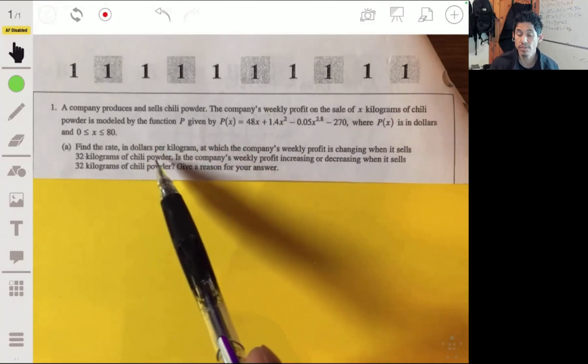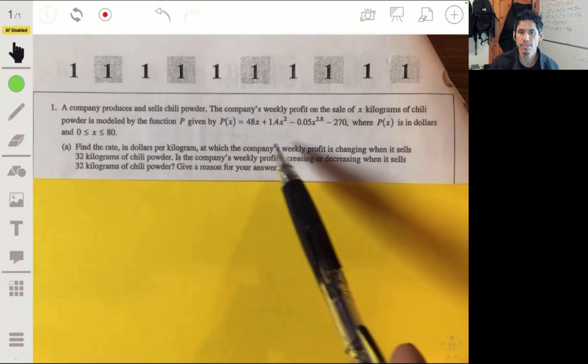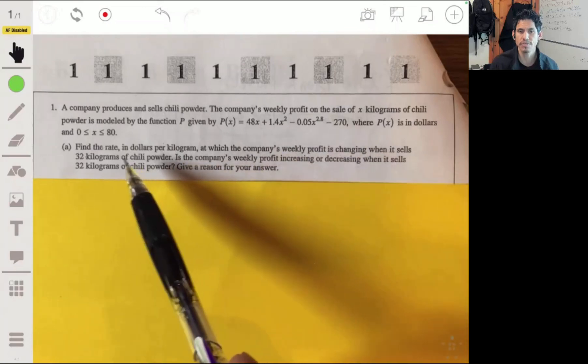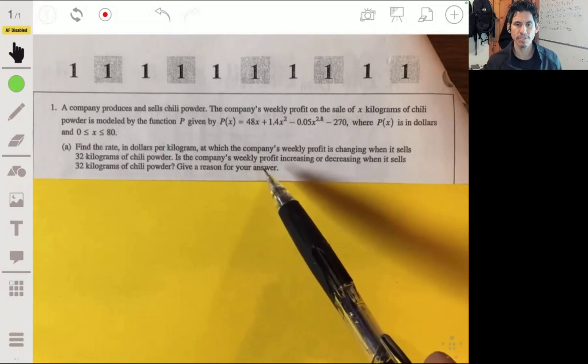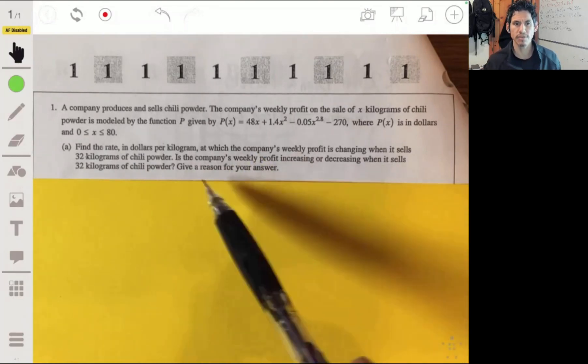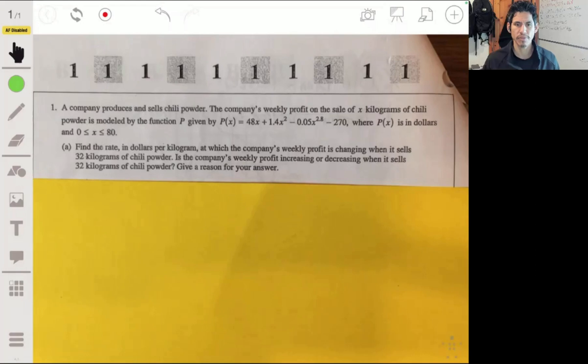Part A: Find the rate in dollars per kilogram at which the company's weekly profit is changing when it sells 32 kilograms of chili powder. Is the company's weekly profit increasing or decreasing when it sells 32 kilograms of chili powder? Give a reason.